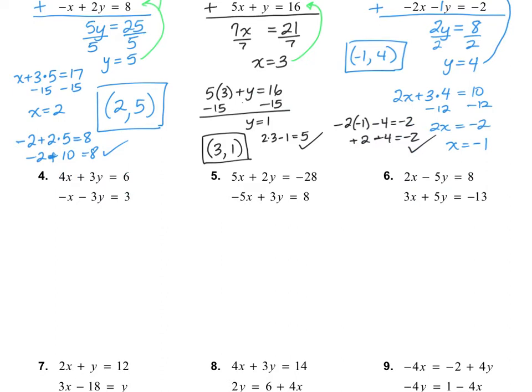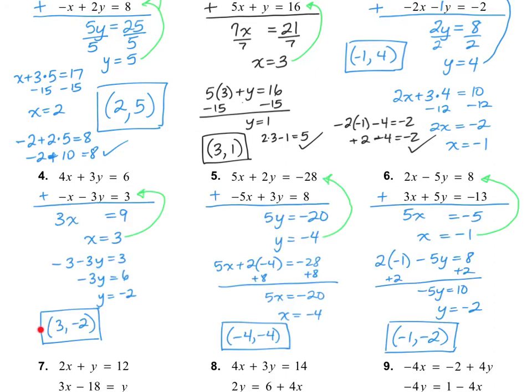Numbers 4, 5, and 6 are done the same way that we did numbers 1, 2, and 3. So go ahead and try numbers 4, 5, and 6 on your own. For number 4, I got (3, -2). For number 5, (-4, -4). And number 6, (-1, -2). If you got them incorrect, please pause the video and see if you can find your mistake.